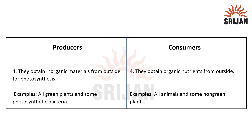Another point of difference is that producers obtain inorganic materials from outside for the process of photosynthesis, whereas consumers obtain organic nutrients from outside. Examples of producers are all green plants and some photosynthetic bacteria.